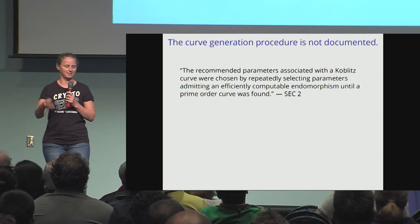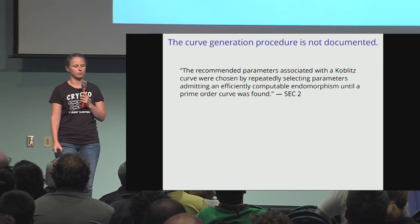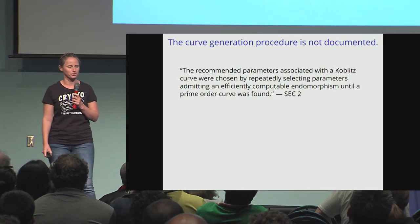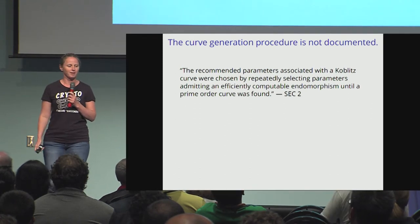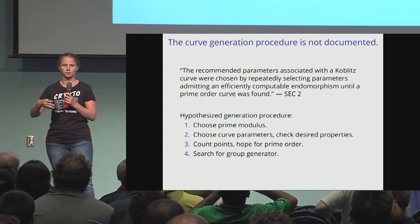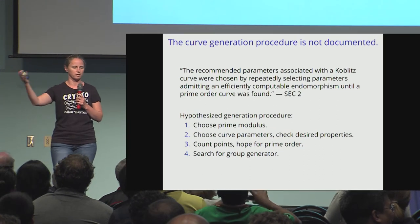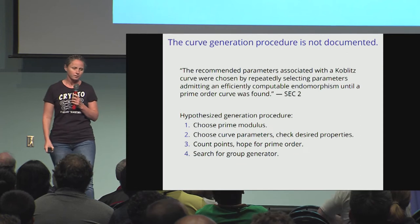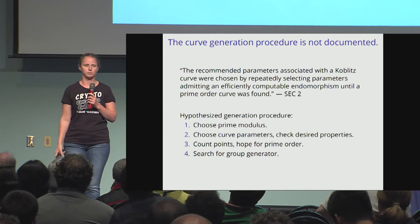If you look at the SEC 2 standard produced by Certicom, this is all they say about the generation of these curves: the recommended parameters associated with a Koblitz curve were chosen by repeatedly selecting parameters admitting an efficiently computable endomorphism until a prime order curve was found. They don't specify how they selected these parameters. The natural generation procedure you would expect is: choose a prime modulus, choose curve parameters, check properties, count points, hope for a prime order curve, stop when you get a prime order group, then search for a generator and publish it.